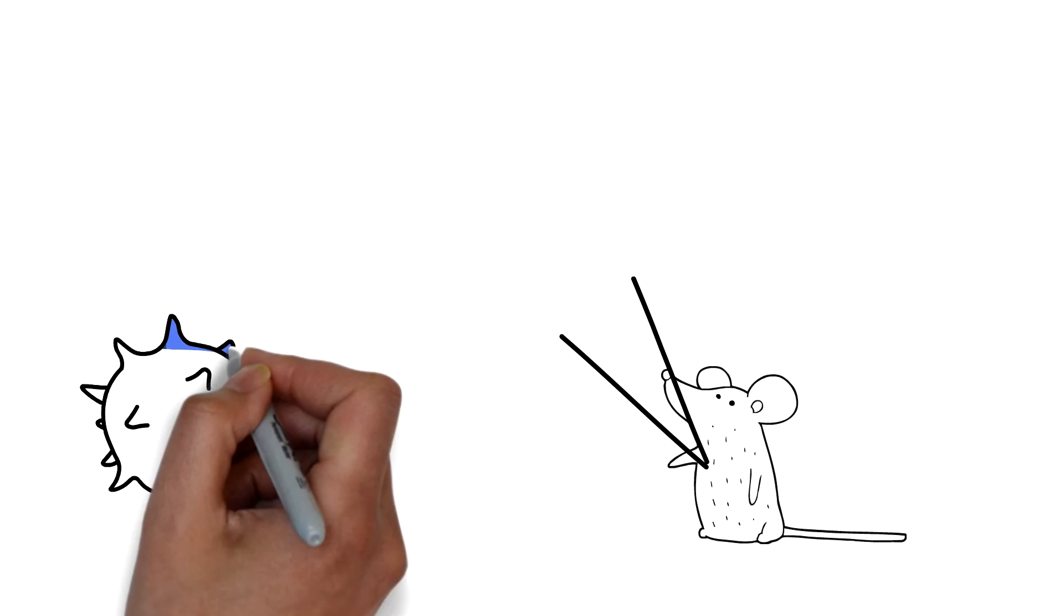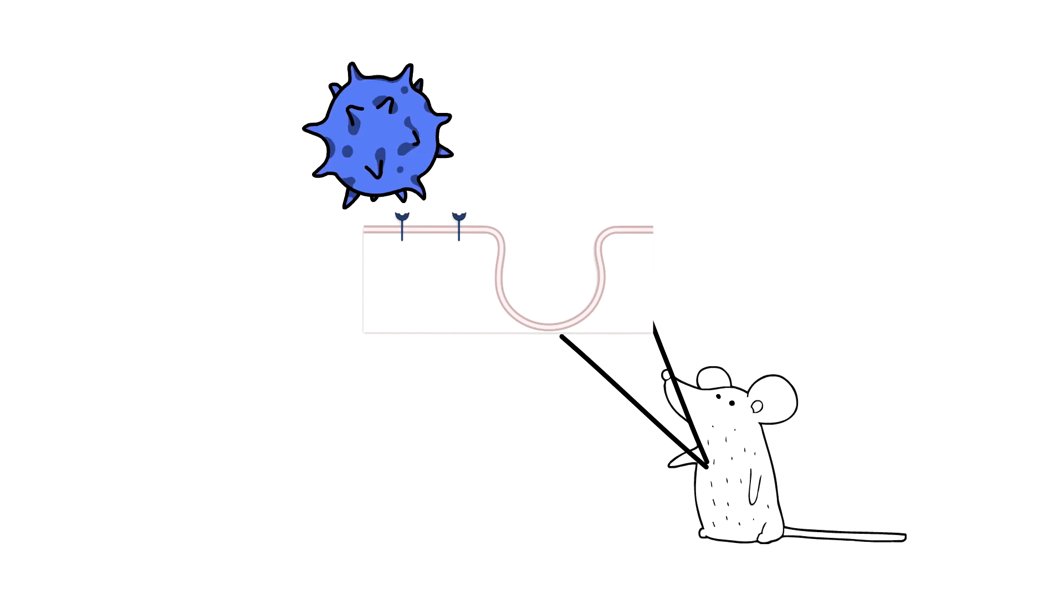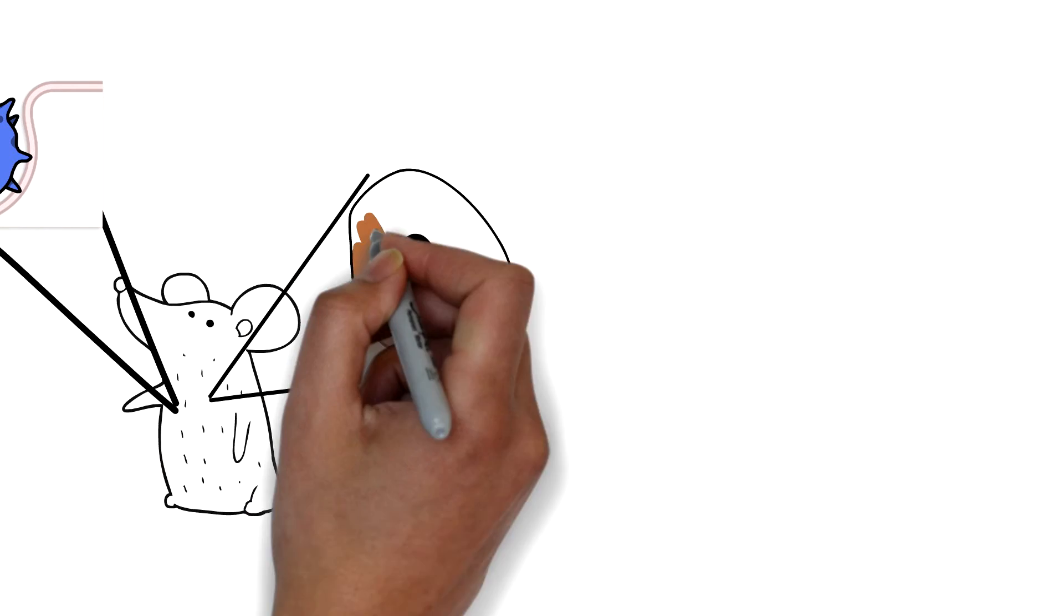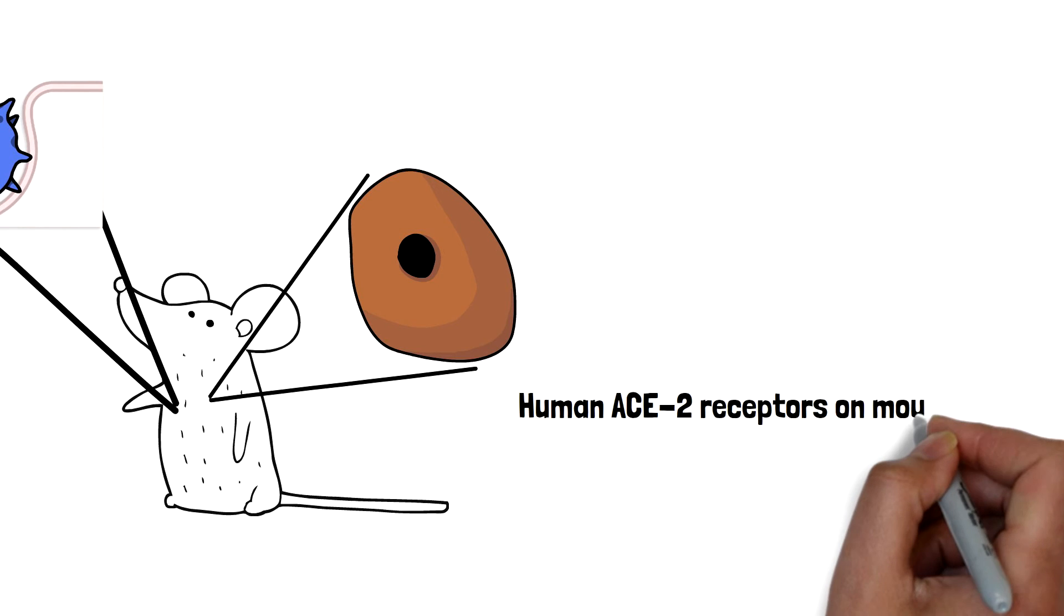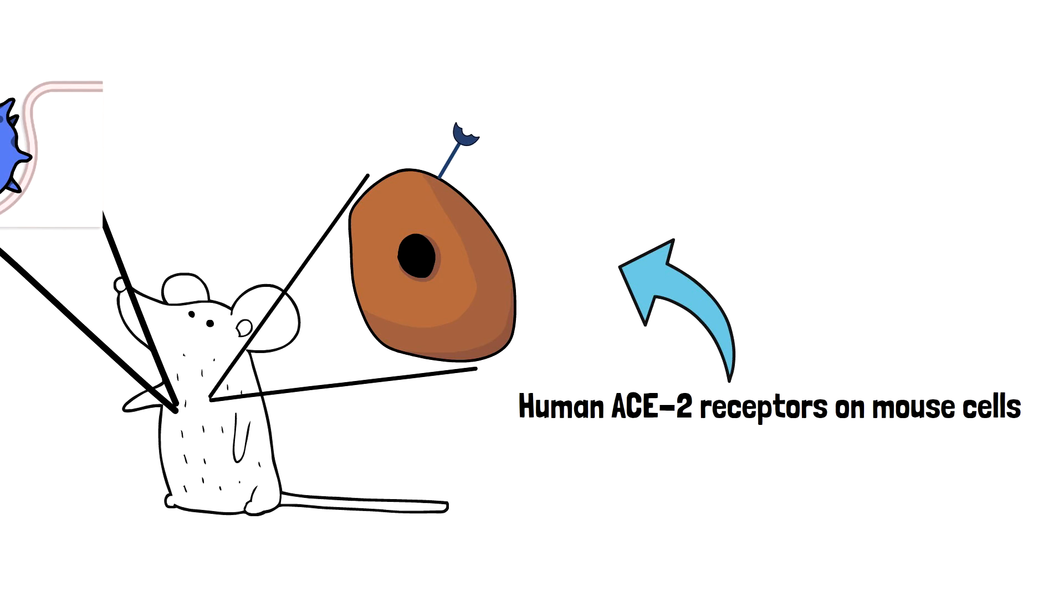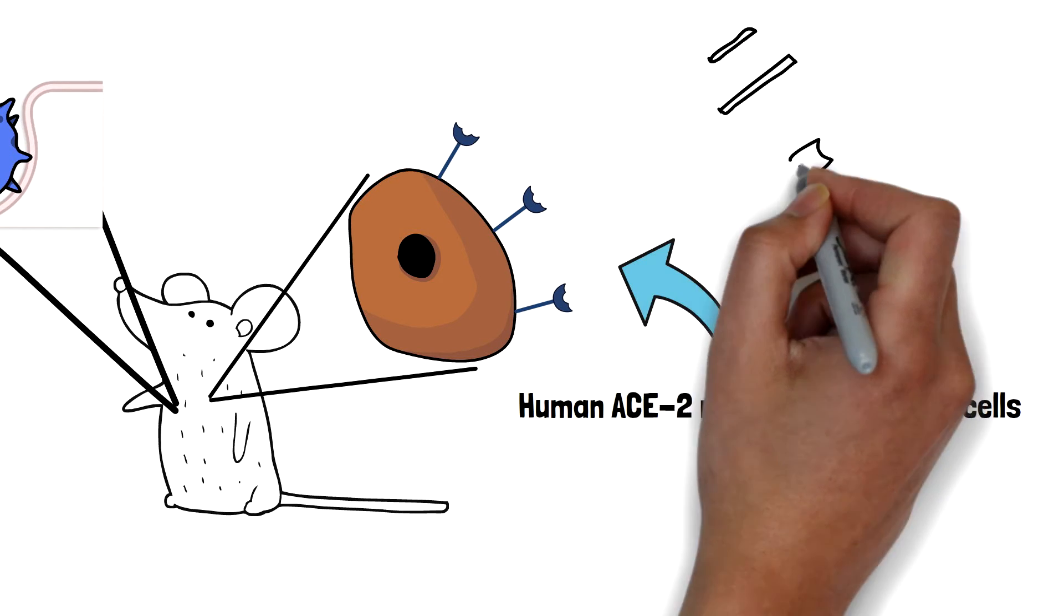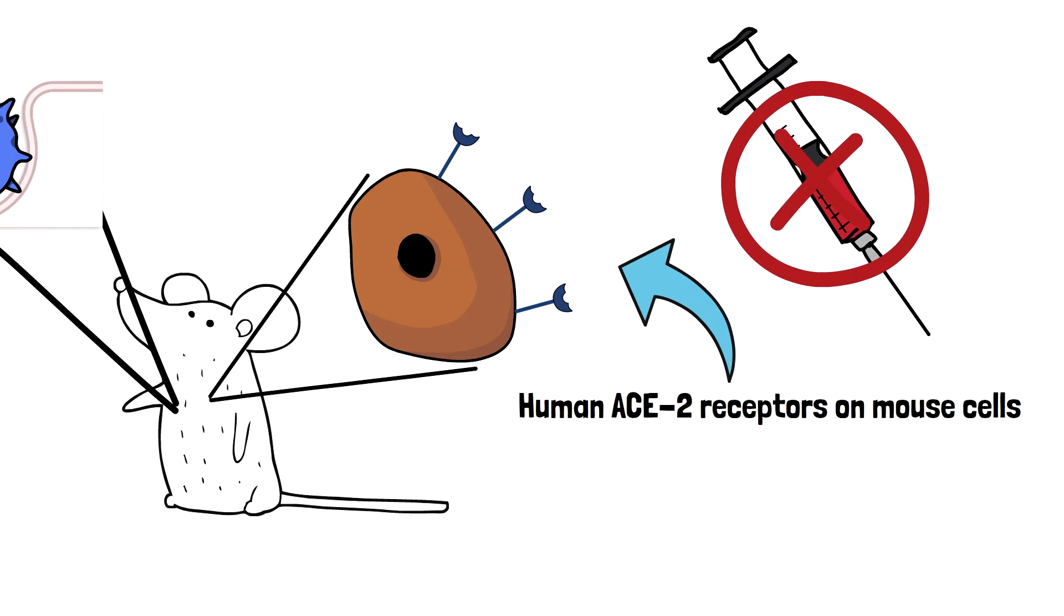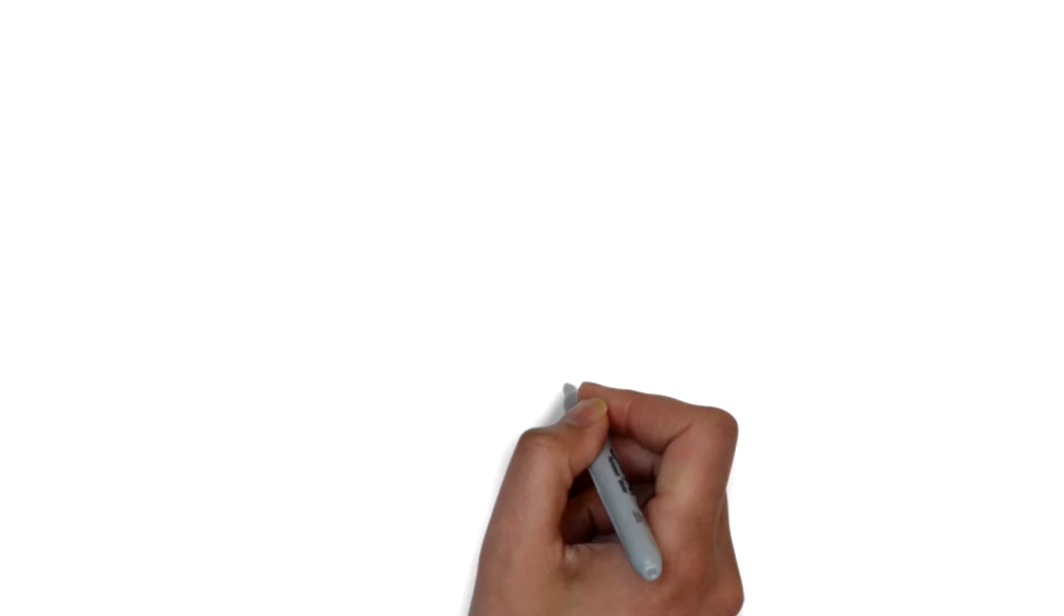sick with COVID for the purpose of research, of course, is to engineer the mouse cells to express these human receptors. And ultimately, how can we get the cells to express those complex human receptors? We can't just inject them. It doesn't work that way. The only way we can get those receptors to be expressed on the cells